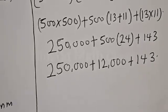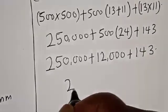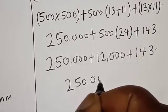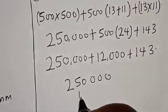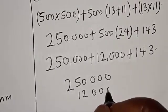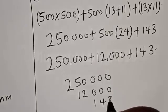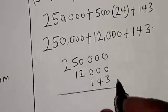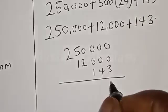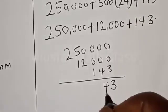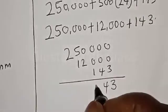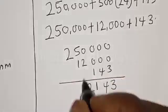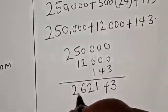Now, let's add everything together. We have 250,000, then 12,000, then 143. We have 3 plus 0, that is 3, 4 plus 0, 4, 1 plus 0, that is 1. Then we have 2, and here is 6, and here is 2.